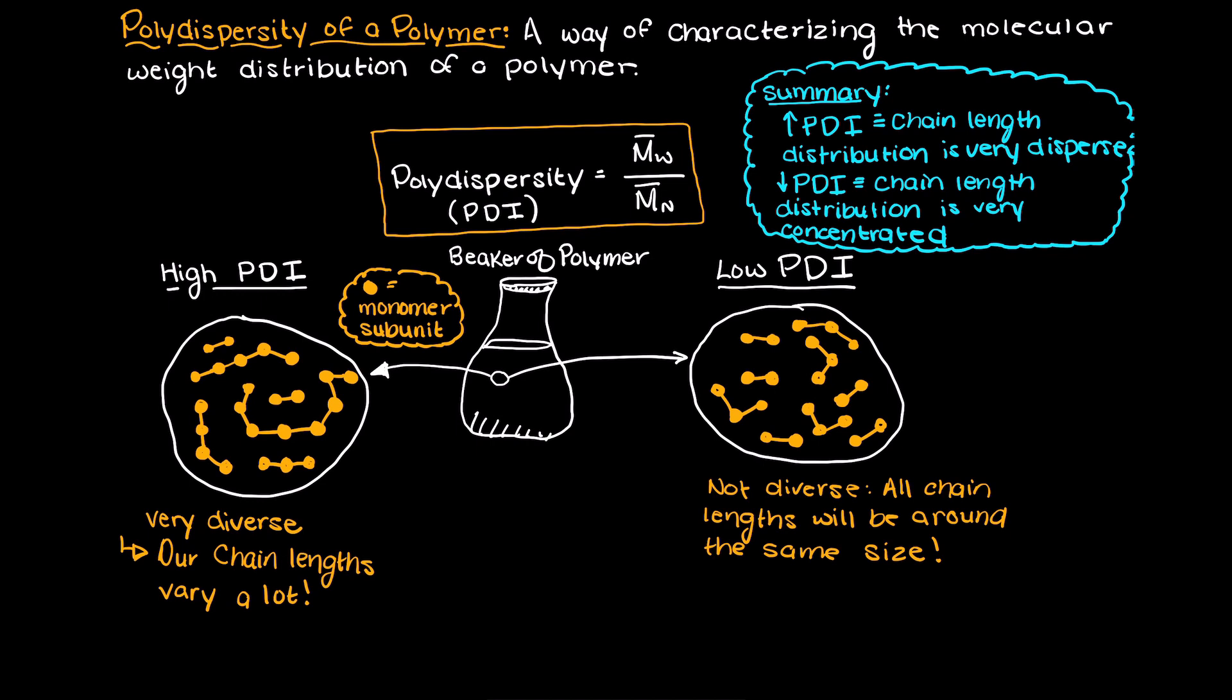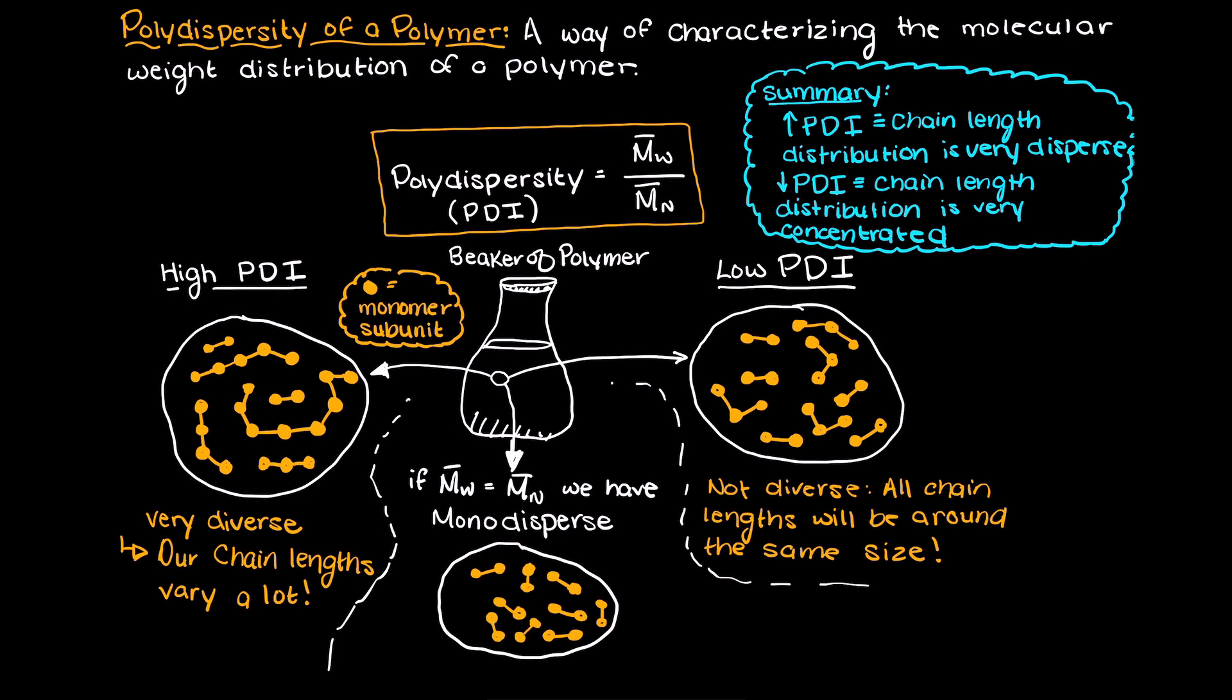I should also mention that there is a rare case in which the weight average molecular weight and the number average molecular weight are equal, and this is called monodispersed polymers. This means that all of our polymers are the exact same length.